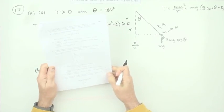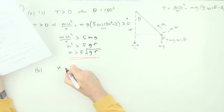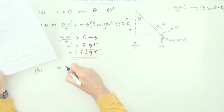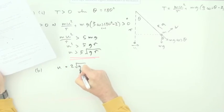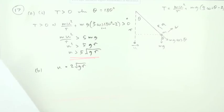Now part b, for three marks, given the value of u isn't as much as that, that it's only 2 root gr. Now that means it's not going to make it to the top then, because it has to exceed that to get round the top. So it just says how far up would it get before it stops?